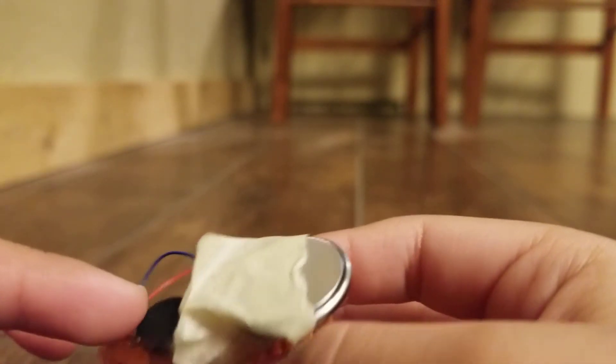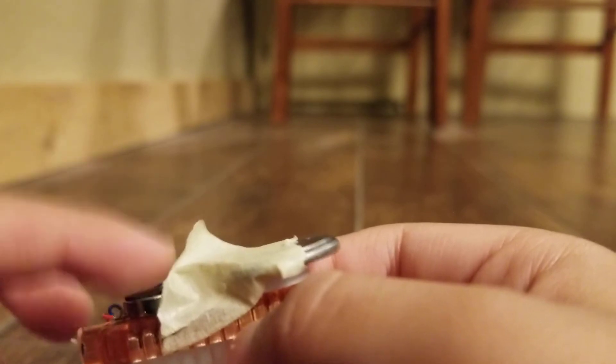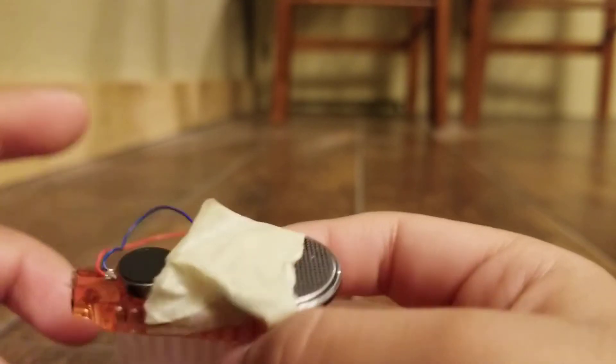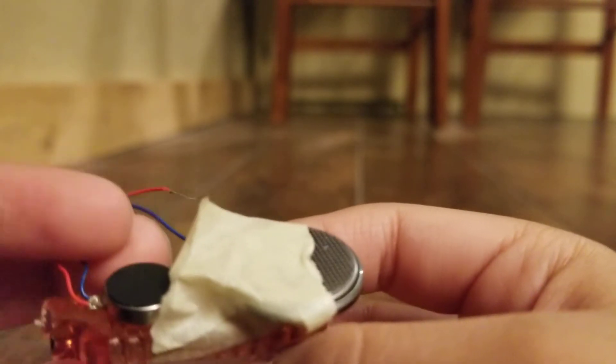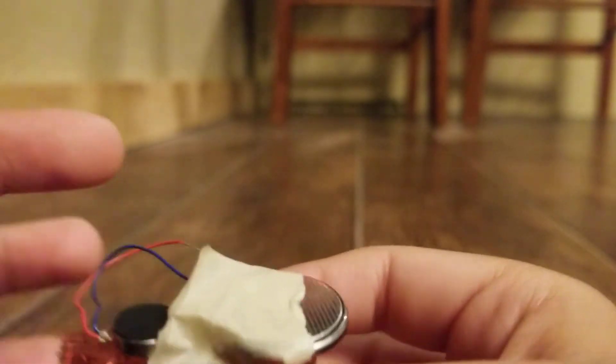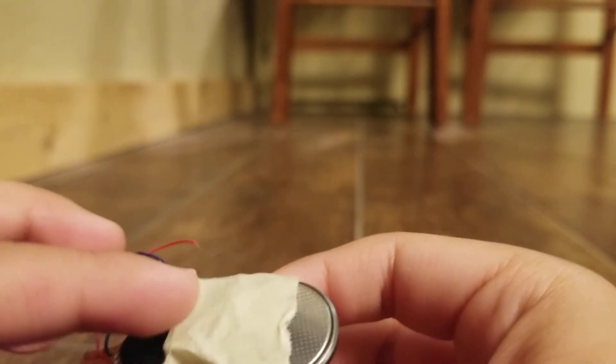You got to get this sticky ball thing, put it right there. The energy power generator thing comes with these two wires connected to it. Then you're gonna connect the blue wire and tape it right there.